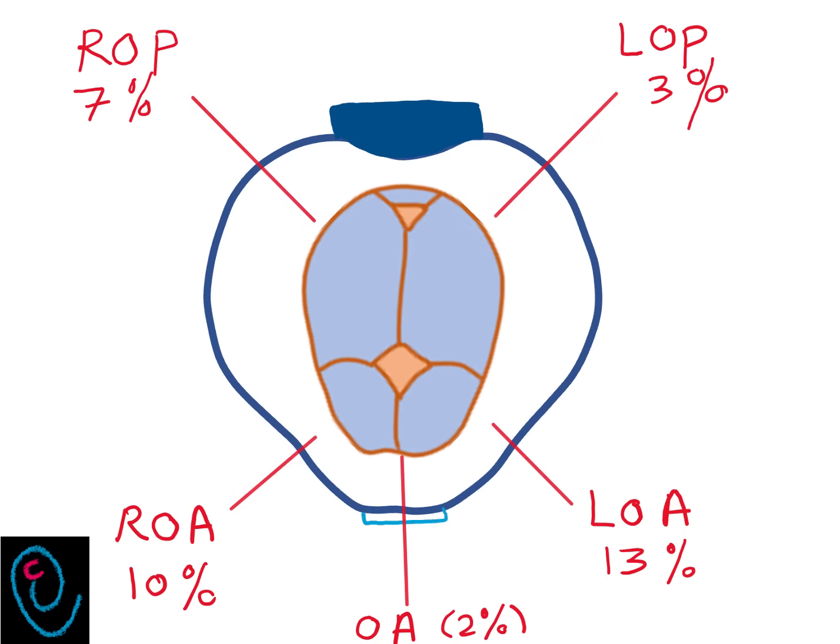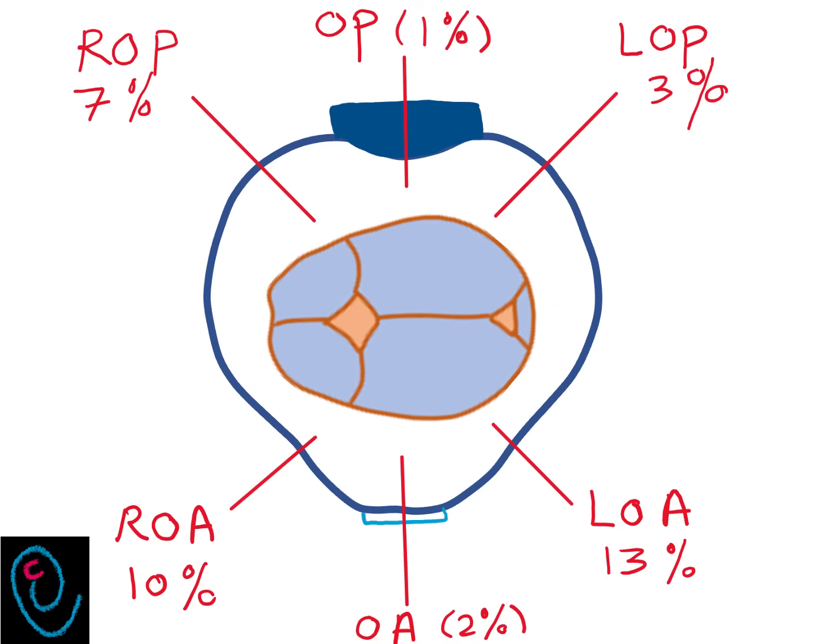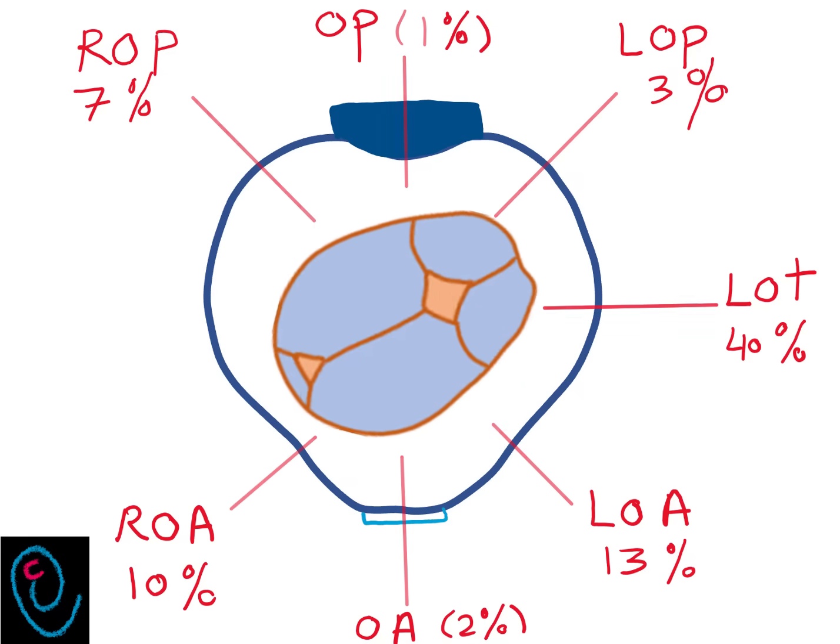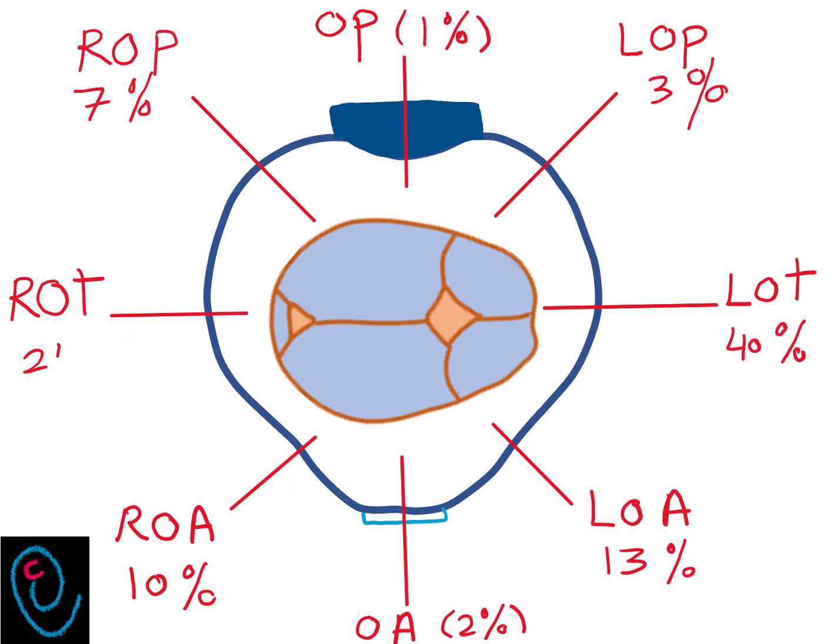And when the occiput is directly anterior to the sacrum, it's called direct occipital posterior. And finally, there are two transverse positions: left occipital transverse and right occipital transverse.